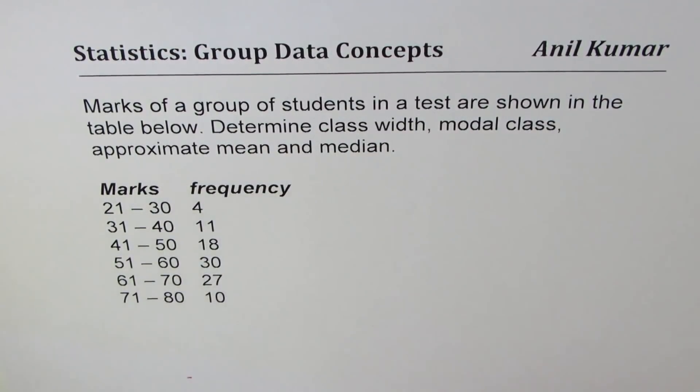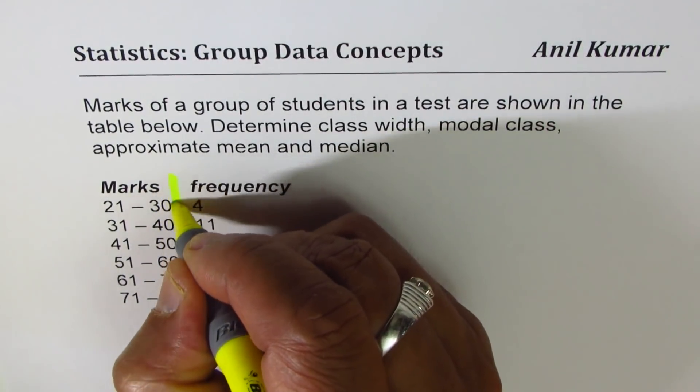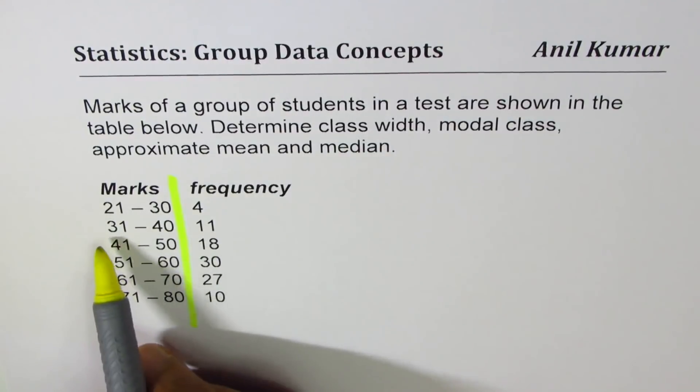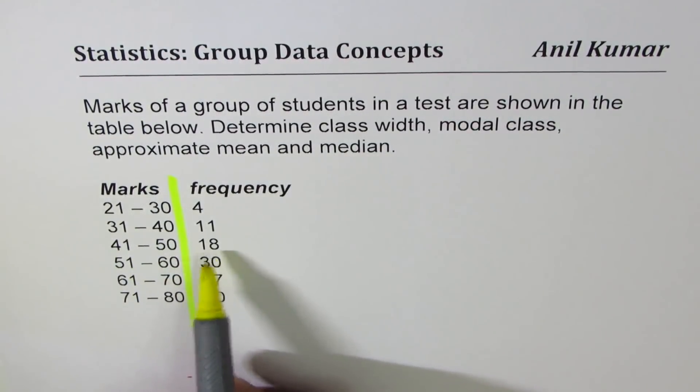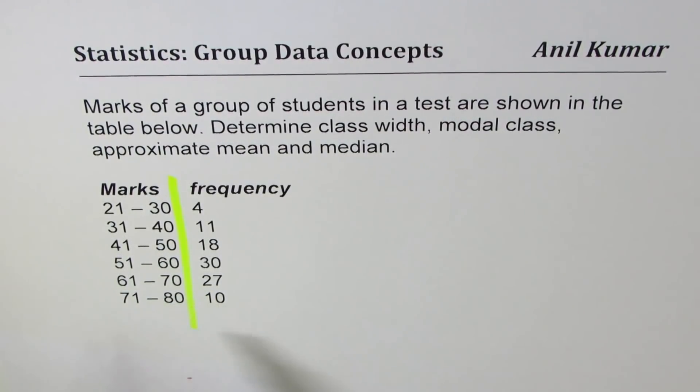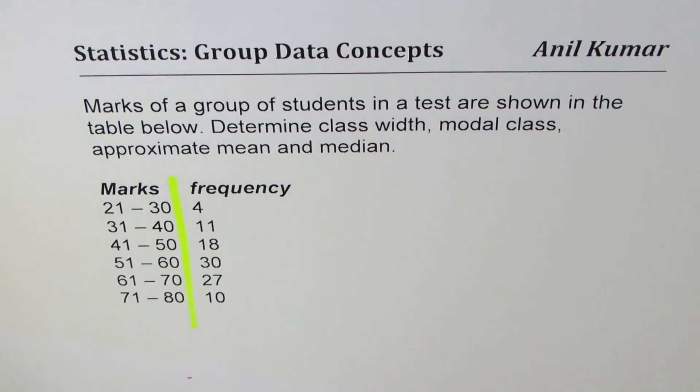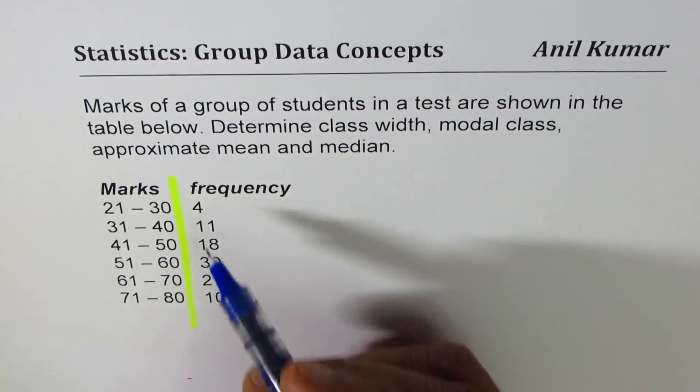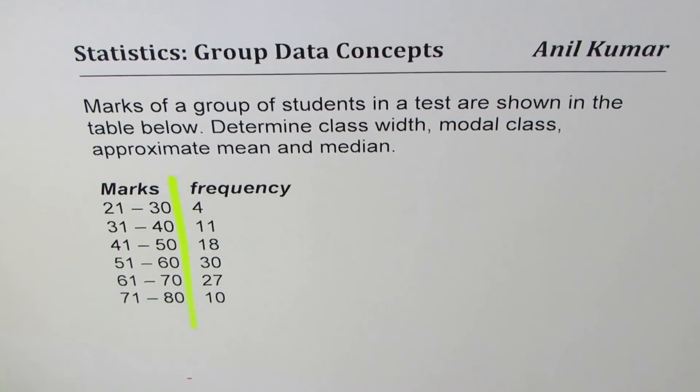So here we are given the marks. Marks are written in intervals: 21 to 30 has 4 students, 31 to 40 has 11 students, 41 to 50 has 18 students, 51 to 60 has 30 students, 61 to 70 has 27 students, 71 to 80 has 10 students. Whenever you are given data we should figure out what is the total number of students in such data.